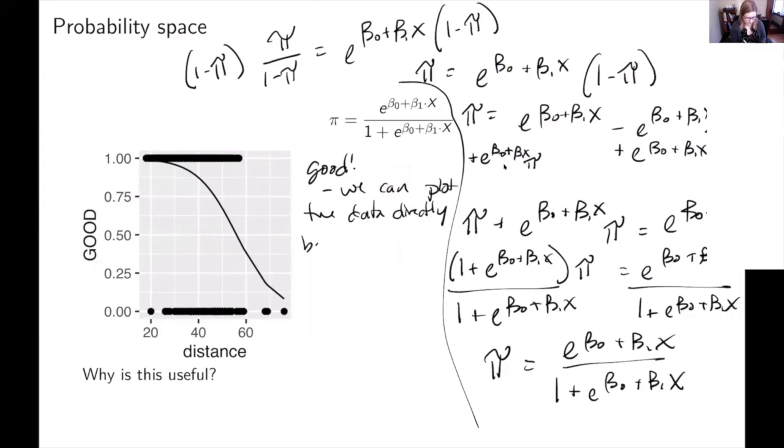And then the bad thing about this space is we don't have a nice sentence. I don't have a way to say for this happening, this happens to the probability. There's just no nice sentence in probability space. We can't interpret the coefficients in that space, unfortunately.